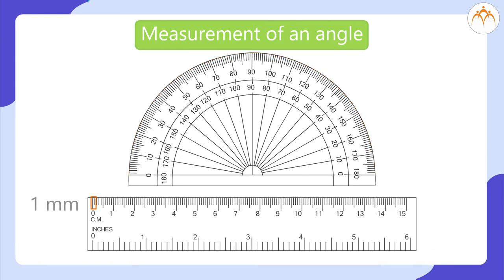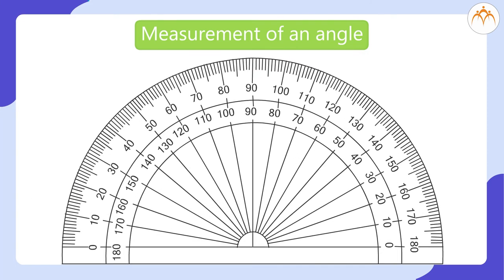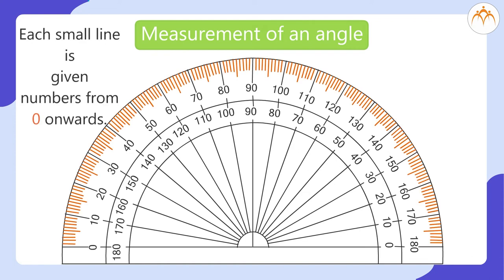Each marking line on a ruler shows 1 mm. Similarly, each part is known as one degree. One degree is written as one degree. Look at the protractor from the left-hand side. Each small line is given numbers from 0 onwards. Every tenth line has a longer line. Like this, the divisions are marked from 0, 10, 20 till 180.